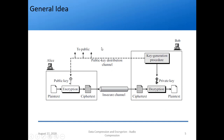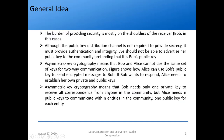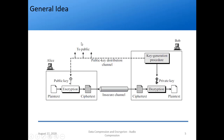We also discussed the public key distribution channel. Even though it is public, it must provide authentication and integrity. As shown in the diagram, Alice uses an encryption algorithm and Bob's public key to get ciphertext, sends it through an insecure channel, and Bob uses his private key with a decryption algorithm to recover the plaintext. The onus mainly lies on the shoulders of the receiver, and there is a public key distribution channel.